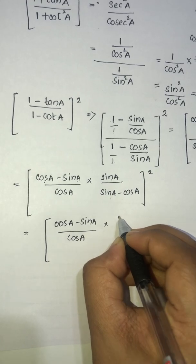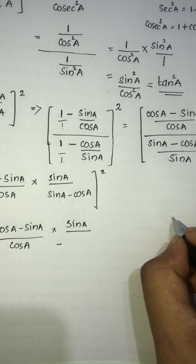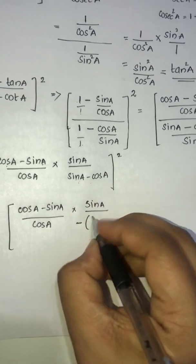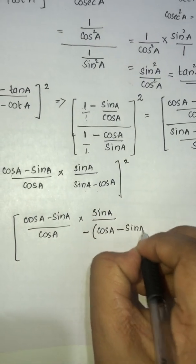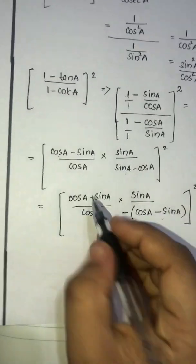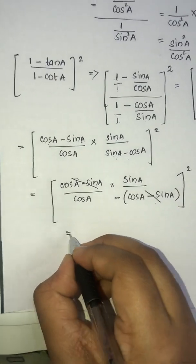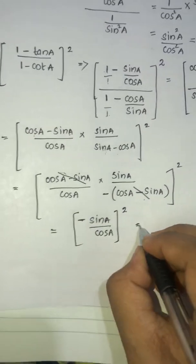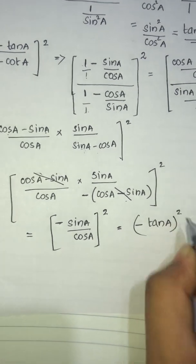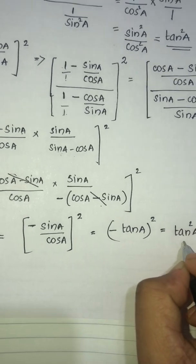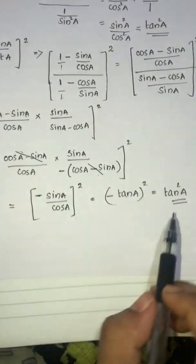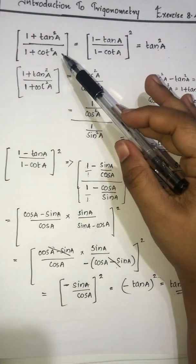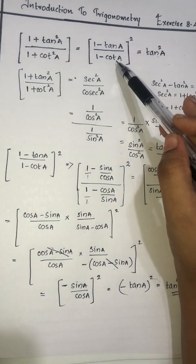Here sinA minus cosA and cosA minus sinA differ by a negative sign, so we get a negative which cancels when squared. The terms cancel giving sinA/cosA whole squared, which is (−tanA)² = tan²A. Negative times negative is positive, so it equals tan²A. Hence proved.